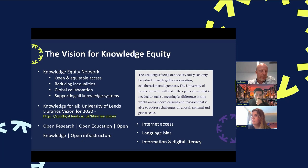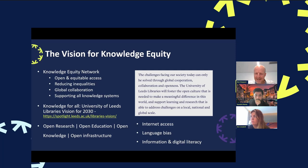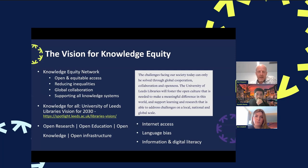The University of Leeds Library's vision for 2030 — 'Knowledge for All' — has a very similar emphasis to the Knowledge Equity Network. We work closely on the open research agenda at Leeds and across the sector, including the open research indicators project with UKRN, and the broader issues of open research, open education, open knowledge, and open infrastructure. Key challenges we need to be aware of include internet access, language bias, and information and digital literacy — really emphasizing real collaboration over competition.